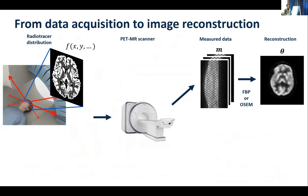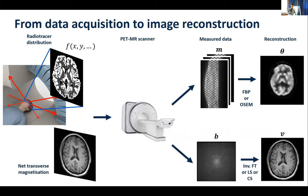This is my one slide on PET reconstruction — you've already covered it; Chris has covered that nicely earlier. So we have some radiotracer distribution inside a PET-MR scanner. We collect maybe a thousand sinograms, and then we'd use either filtered back projection or ordered subsets EM to deliver a reconstruction of the object inside that scanner field of view. Similarly for MR, you collect your k-space, do inverse Fourier transforms, solve a least squares problem, or do compressed sensing to get your reconstruction.